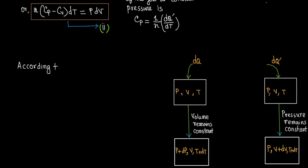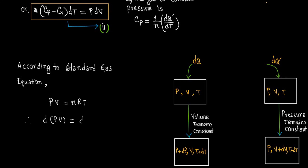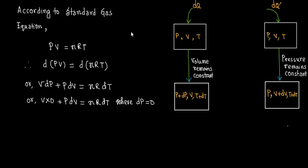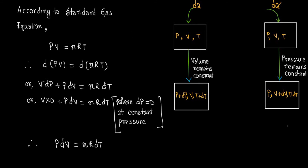According to the ideal gas equation, pV equals nRT. Differentiating both sides gives d(pV) equals d(nRT), or V dP plus p dV equals nR dT. At constant pressure, dP equals zero, so p dV equals nR dT, which is equation 3.